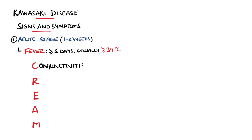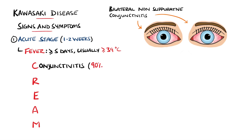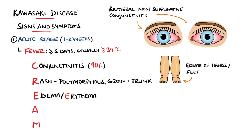The mnemonic CREAM will help you to remember the findings in the acute phase and also the criteria for diagnosis. C is for conjunctivitis, which is a non-suppurative or non-exudative bilateral conjunctivitis and is seen in over 90% of cases. The R is for a rash, usually a polymorphous widespread rash, particularly on the groin and the trunk. E is for edema or erythema of the hands or feet, and A is for adenopathy, meaning cervical lymphadenopathy above 1.5 centimeters in diameter, which may often be unilateral.